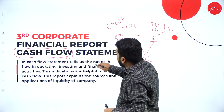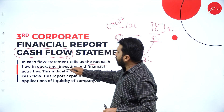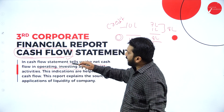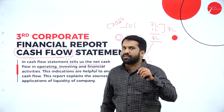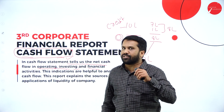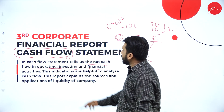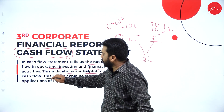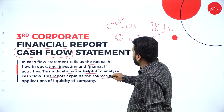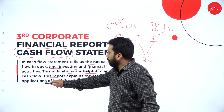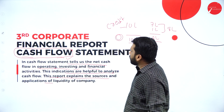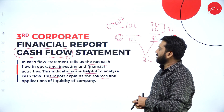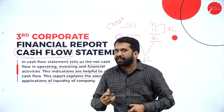Cash flow statement tells us the net cash flow in operating, investing, and financing activities — all three. It results in net cash outflow. This report explains the sources and application of liquidity of the company. Liquidity means in the form of cash.